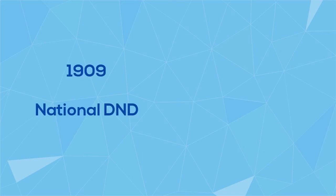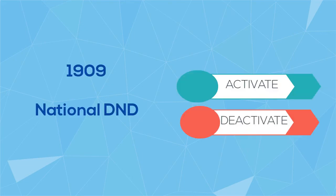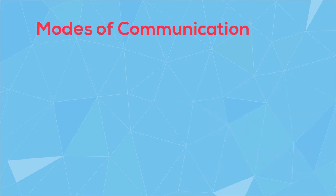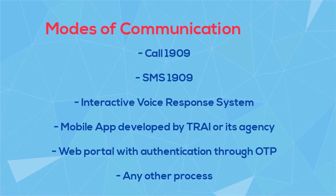The 1909 number also gives you the option to activate, deactivate, or register a complaint regarding a commercial communication. Apart from calling or sending an SMS to 1909, you also have other options like an interactive voice response system, a mobile app developed by TRAI, or web portals with authentication through OTP or any other process.